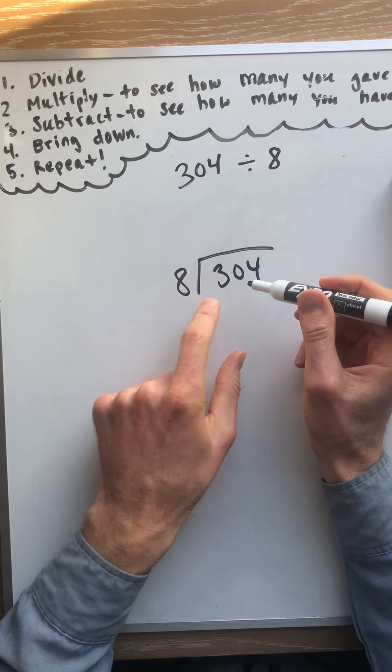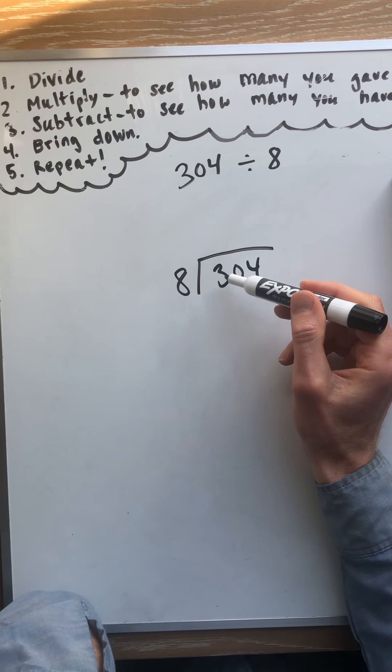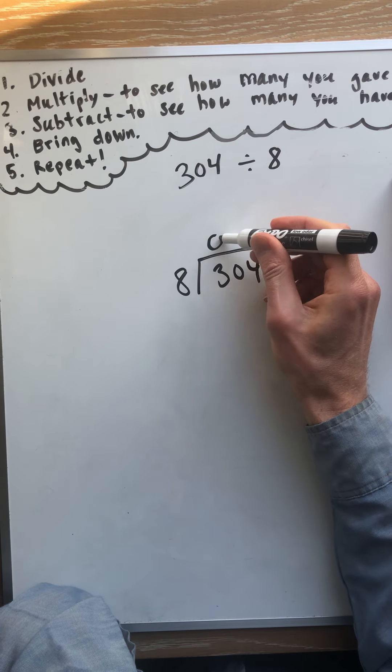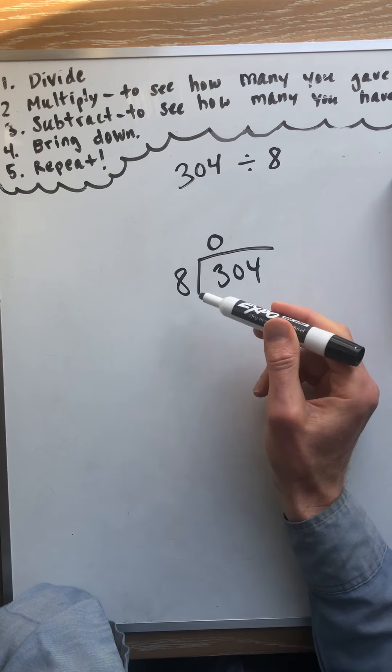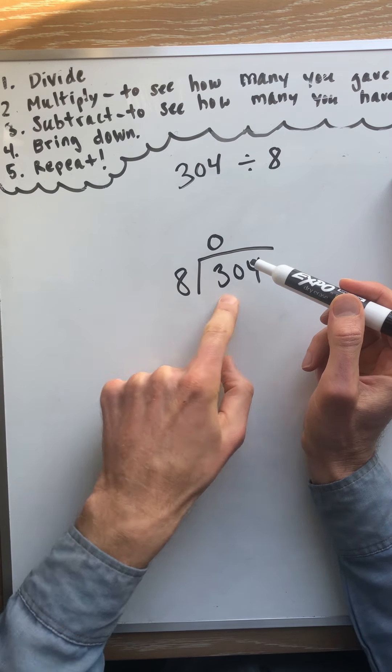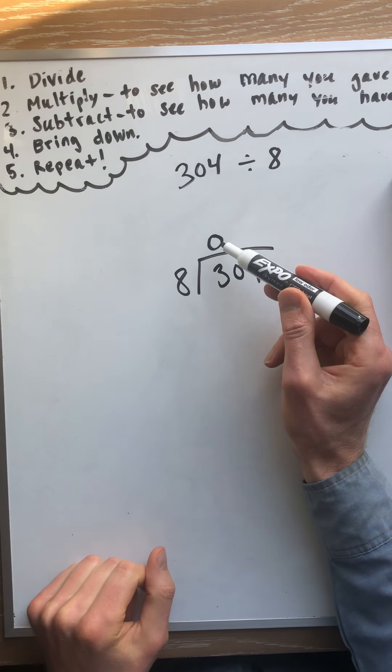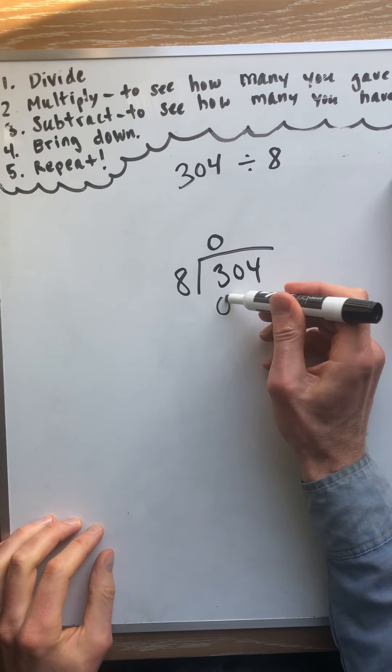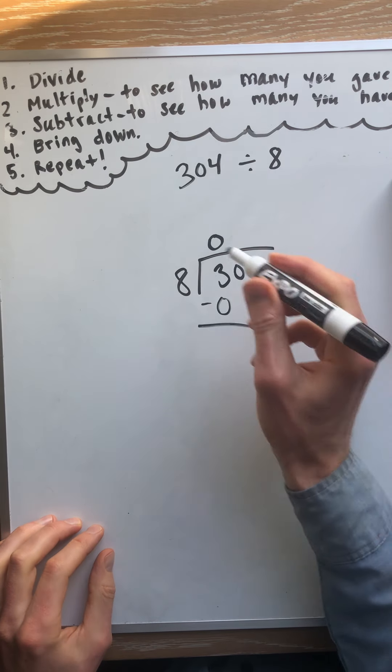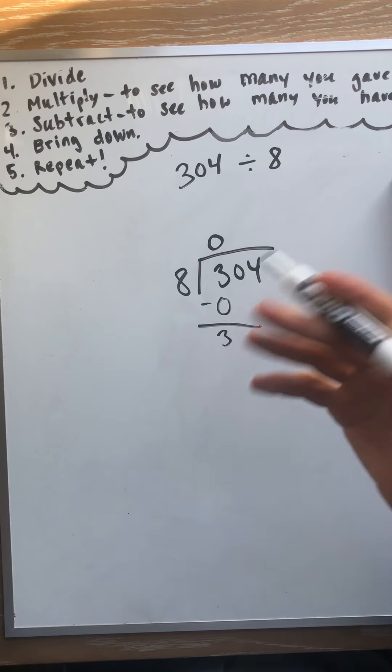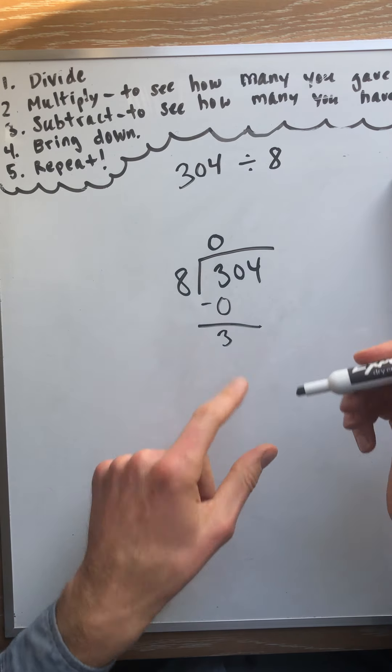So how many hundreds does this person get? How many groups of 8 fit into 3? 0. So nobody gets 100. Can't divide 3 by 8. So if this number is too big, if this number is bigger, larger than that number, it's a 0. So 0. So now I multiply to see how many we gave out. Well, 0 times 8 is 0. We know we gave out 0 of them. Subtract to see how many have left. 3 minus 0 is 3. So we still have all 3 hundreds, that is.